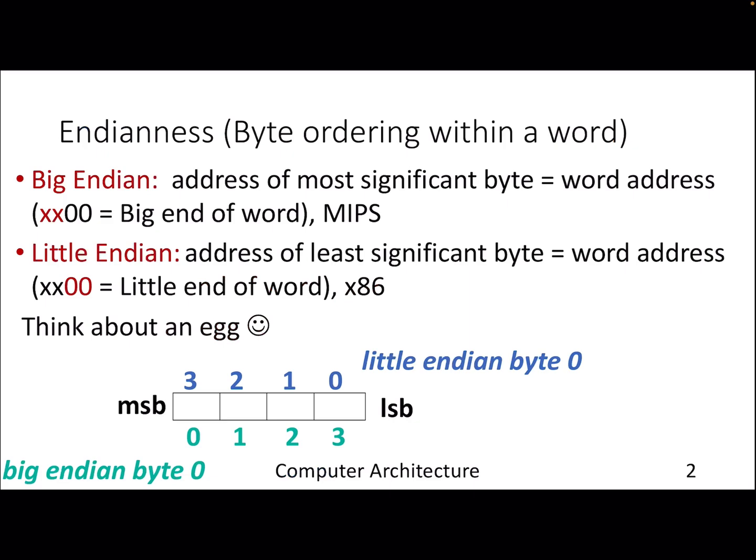Endianness deals with the byte ordering within a word or the bit ordering within a byte. We have discussed that a word is of four bytes, but if you want to extract a particular byte then the byte ordering comes into picture.